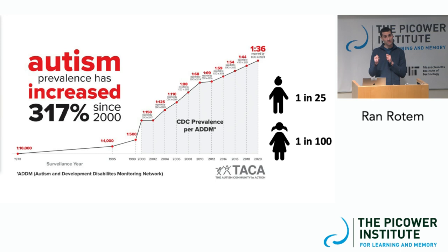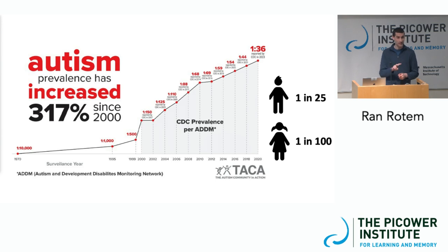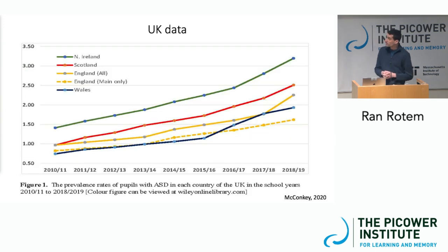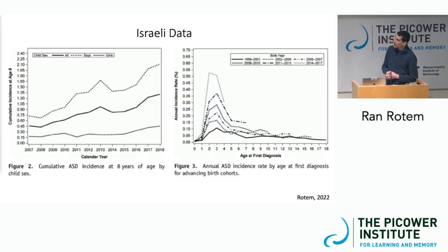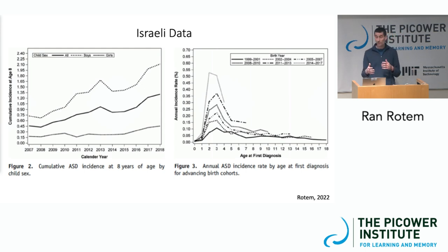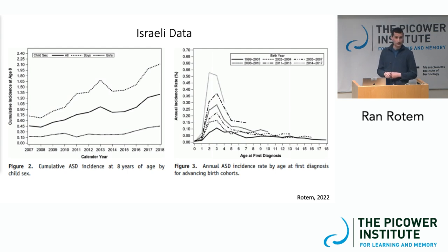The rate is also increasing between years. If you compare CDC data from 2023 to 2021, there has been a 22% increase just in the past two years using consistent measurements from different communities. These trends are not unique to the United States — we see basically the same trend in the UK, and these are data we published recently from Israel showing the same trend. When you look at incidence of new cases by age group, most cases are diagnosed between ages 3 and 4, and comparing different birth cohorts shows rates have gone up regardless of age group.